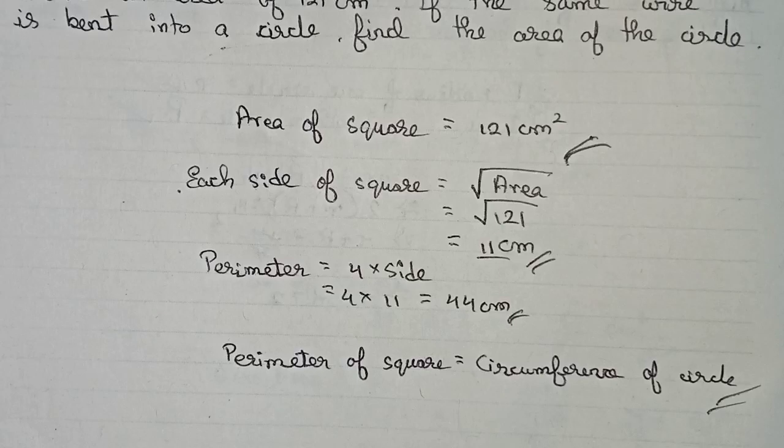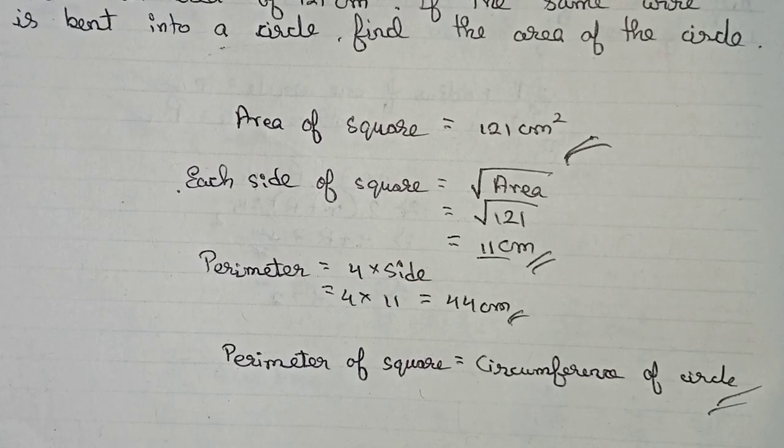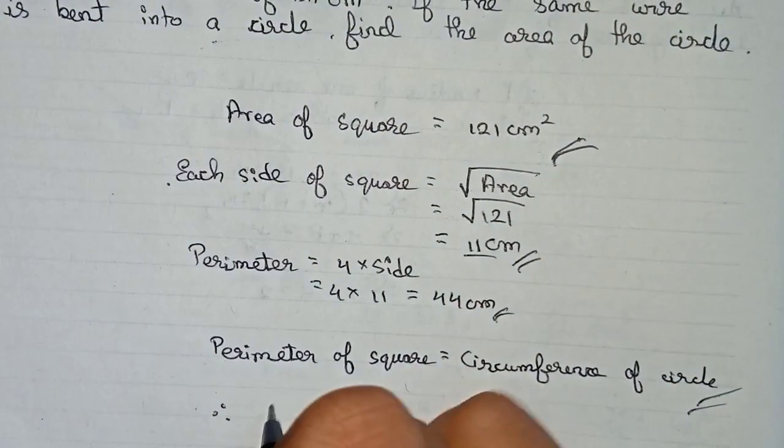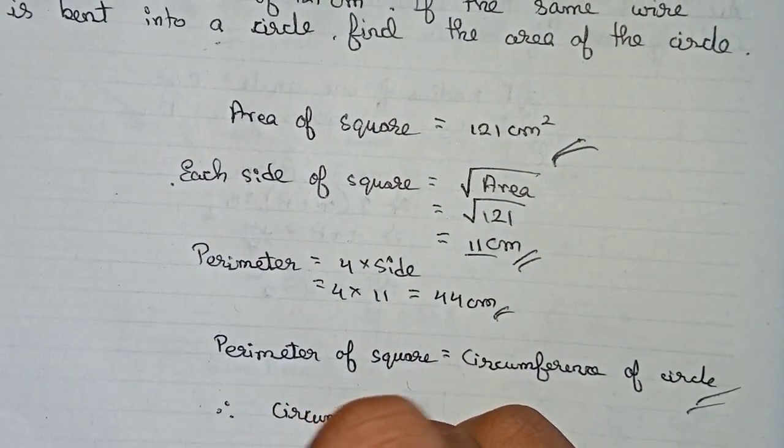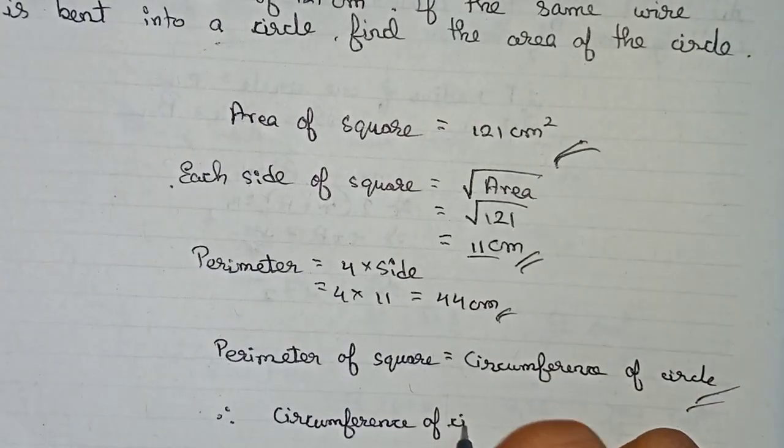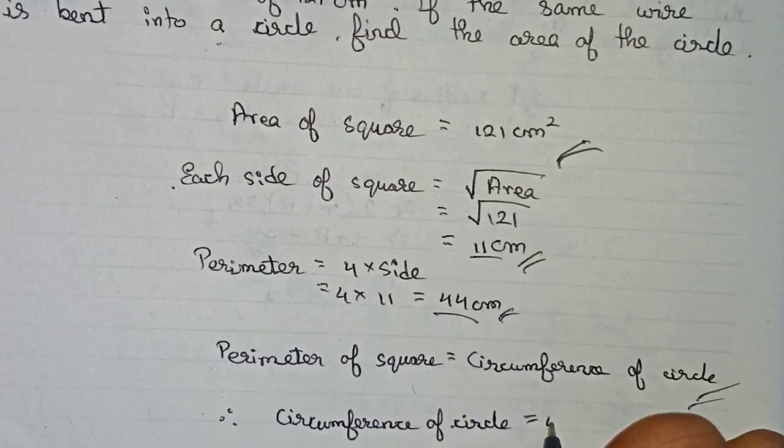So the total length of the perimeter and the circumference will be same. So therefore you can say that the circumference of circle is equal to 44 centimeter.